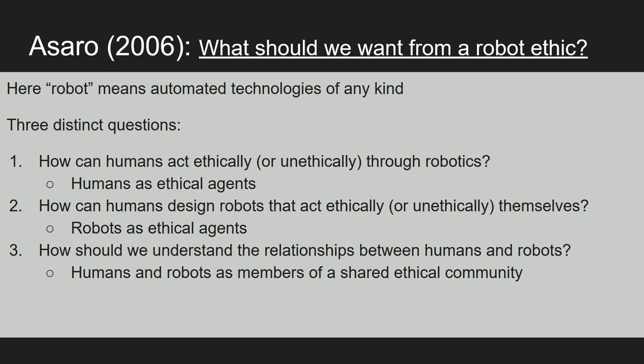But this isn't all that we mean by robot ethics. The second question Peter Saro raises is how can humans design robots that act ethically or unethically themselves. In this case the focus is on robots as ethical agents and what they do, but the question still puts emphasis on the human's ethical role in the design of the robots. The robot is doing something — maybe that thing is ethical or unethical — but there's also the further question of how humans are designing robots to do those things.